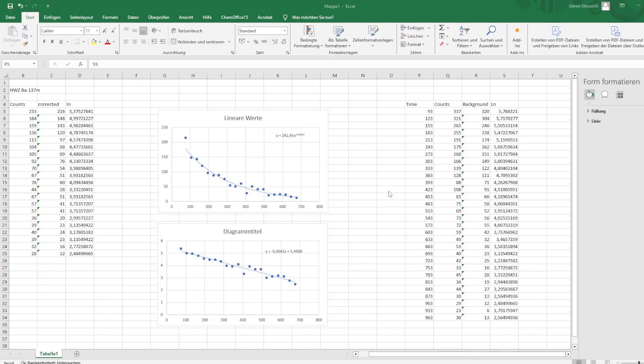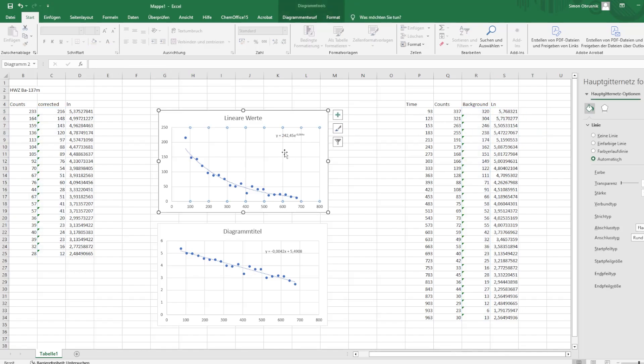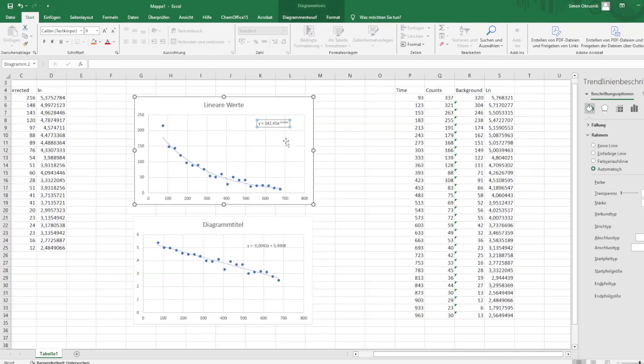So, welcome to Excel. Here we have the data: counts and background. In my case, the background was 17 counts per 20 seconds. Then the values are logarithmized using this formula. Insert everything into the table and display a linear equation and x will be your decay constant.